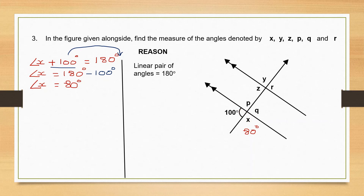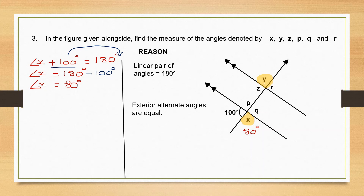Now we will go on to angle y. Look at angle y here and look at angle x. Is there any relation between angle y and angle x? If you look carefully, you will see that they are both exterior alternate angles. Exterior alternate angles are equal, so angle y should be equal to angle x. Angle x we have already found to be 80 degrees, which means angle y is also 80 degrees.